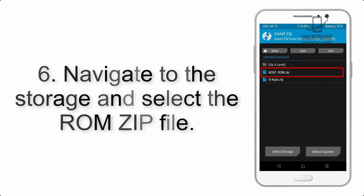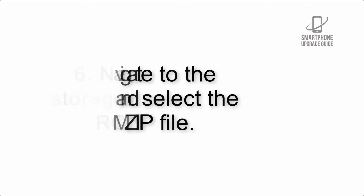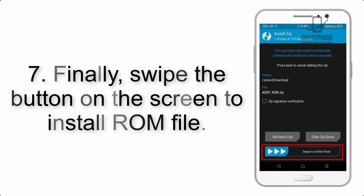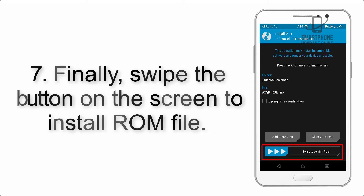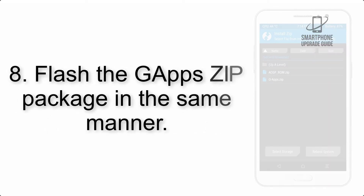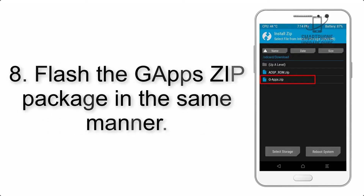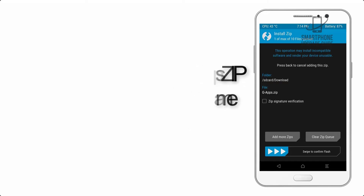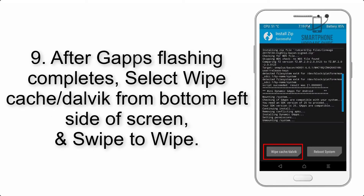Step 6: Navigate to the storage and select the ROM zip file. Step 7: Finally, swipe the button on the screen to install the ROM file. Step 8: Flash the GApps zip package in the same manner.